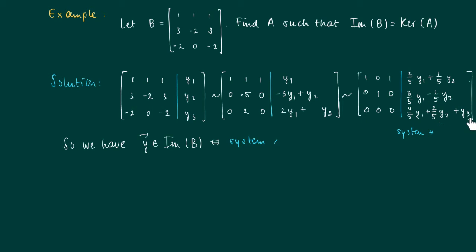Well, it is consistent if we have that this vector here, or this line here, gives only zeros. So we have actually characterized all y in the image of B as the vectors y such that (4/5)y1 + (2/5)y2 + y3 = 0. So 4y1 + 2y2 + 5y3 = 0.